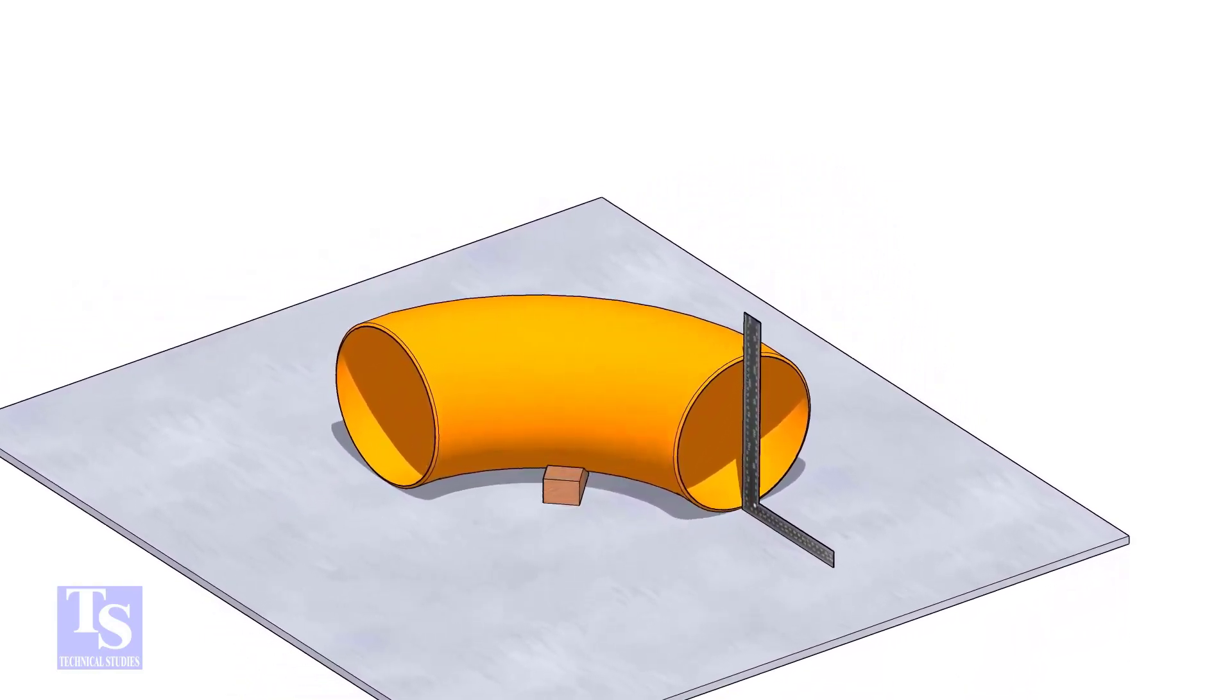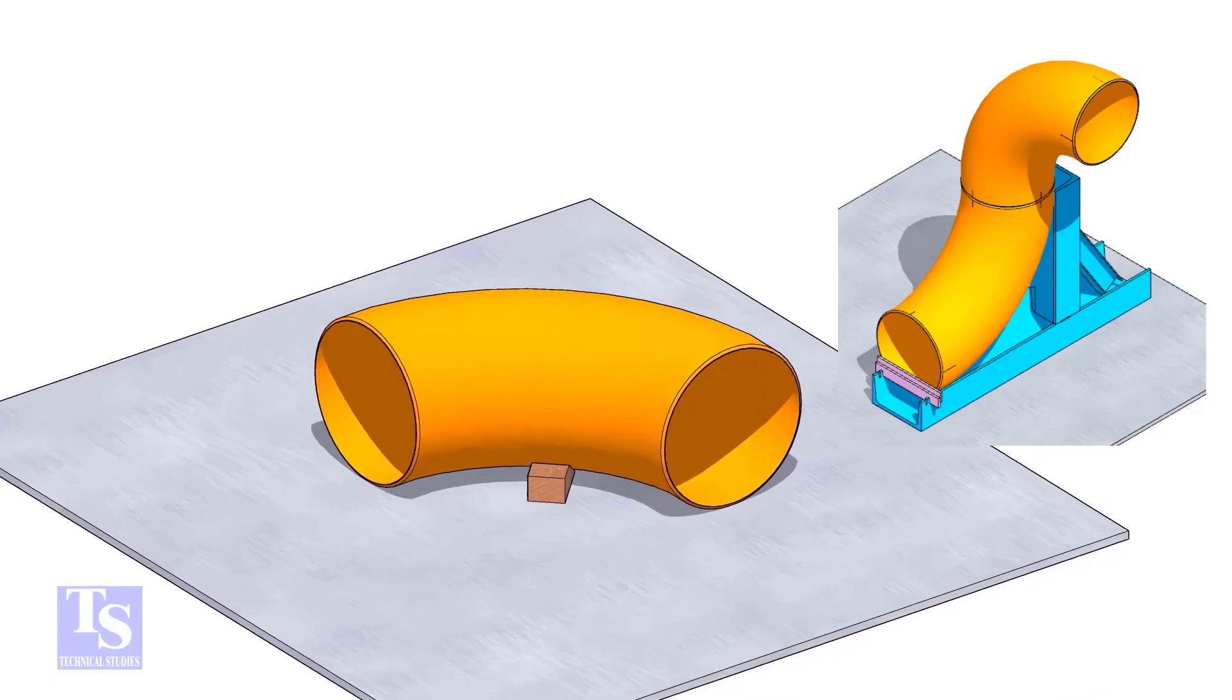I am going to fit up the elbow 90 degrees rotated, so let us divide the elbow ends into four quarters.